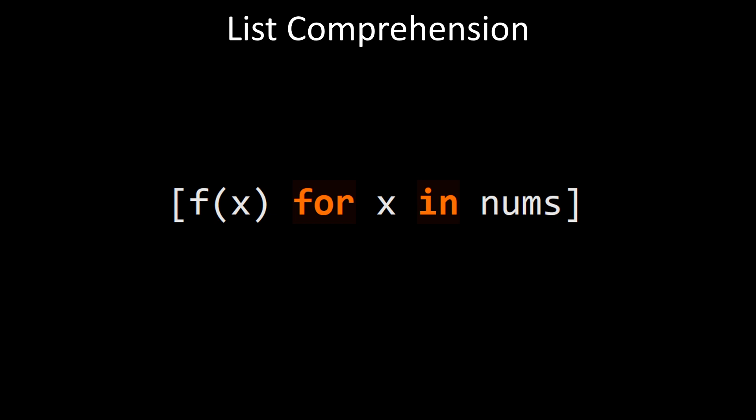So the basic notation is a for loop over some input list nums and a function like f that computes something for each element x in nums.